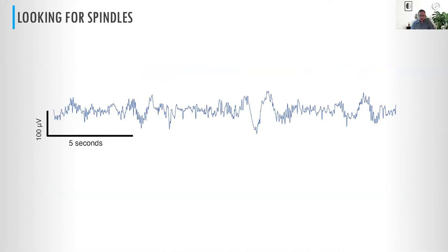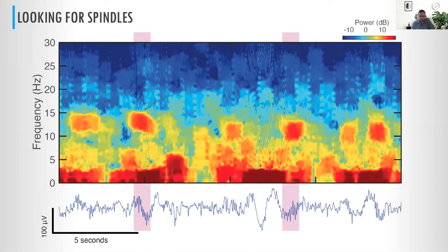Here's a waveform trace — take a minute to see how many spindles you find. An expert scored these regions as having spindles. But when we look at this in the time-frequency domain, we see that yes, there are TF peaks corresponding with these spindles, but we also see a whole bunch of other similar-looking time-frequency peaks that are not scored as spindles.